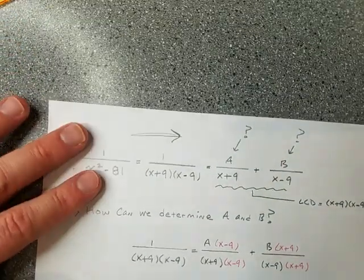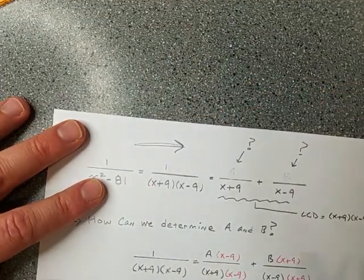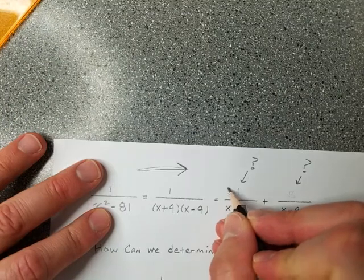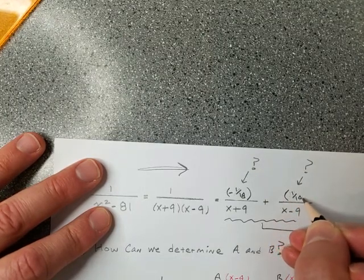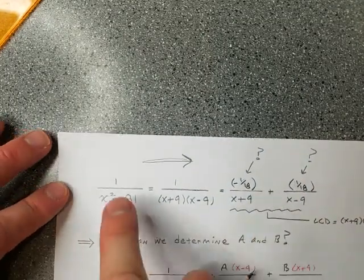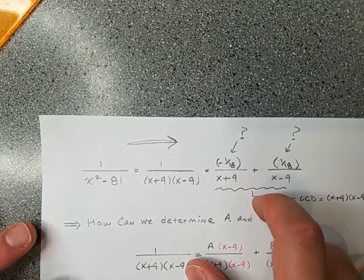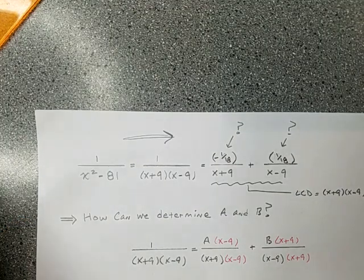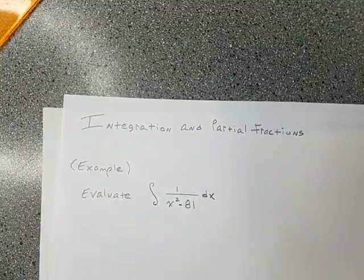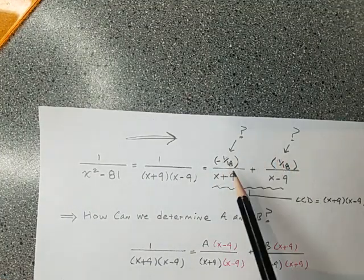I've got the decomposition. A is negative 1 over 18 and B is 1 over 18. Now I know that 1 over x squared minus 81 breaks down into negative 1 over 18 times 1 over x plus 9 plus 1 over 18 times 1 over x minus 9. That's what we're prepared to use. 1 over 18 might not be your favorite number, but it's just a constant and it won't be hard to deal with.